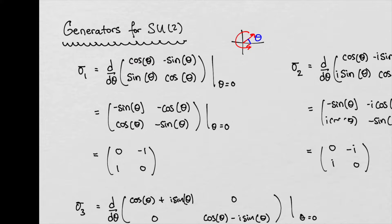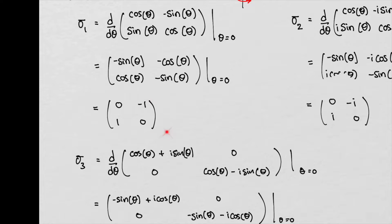Taking the derivative of cosine is negative sine, the derivative of negative sine is negative cosine, the derivative of sine is cosine, and the derivative of cosine is negative sine. Then we set theta equal to zero. So when theta equals zero, we are at the identity. And what you get out is this matrix — this matrix right here is the generator, the thing that initially pushes or initiates this rotation. That's why you could think of it as a generator, something that generates or initiates something.